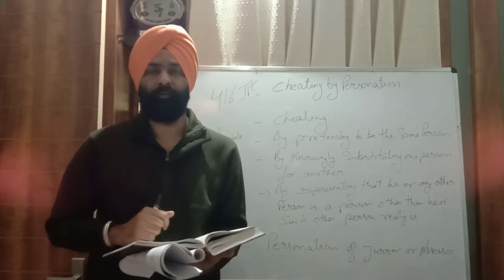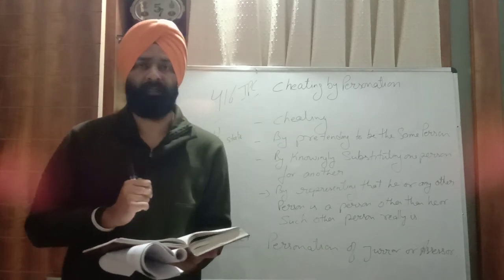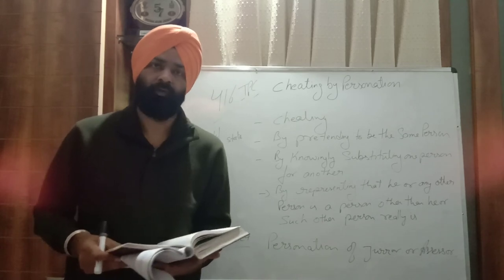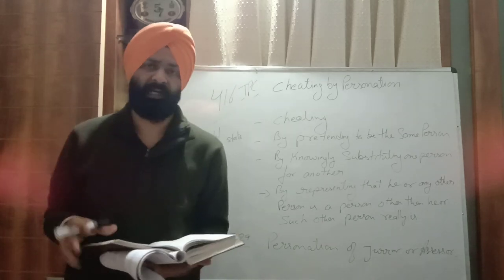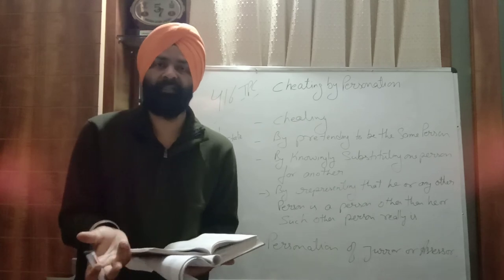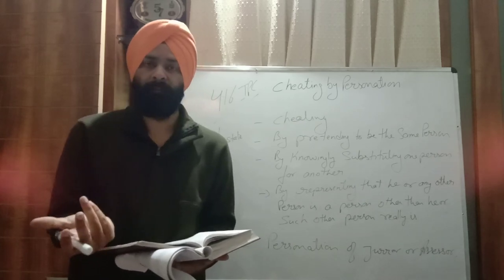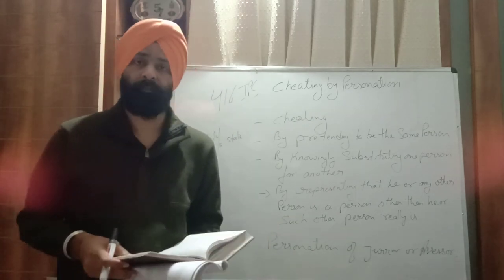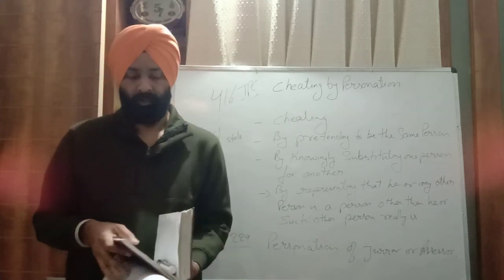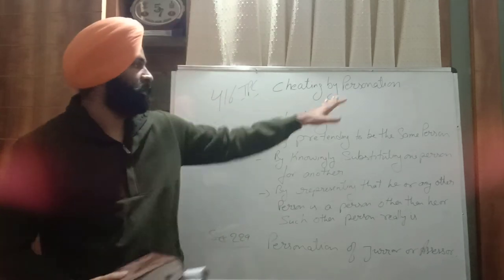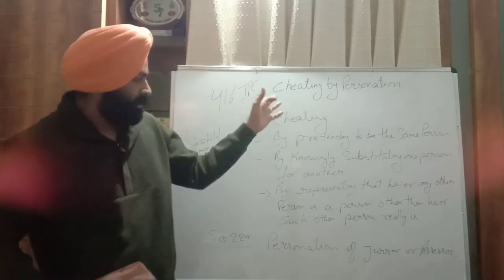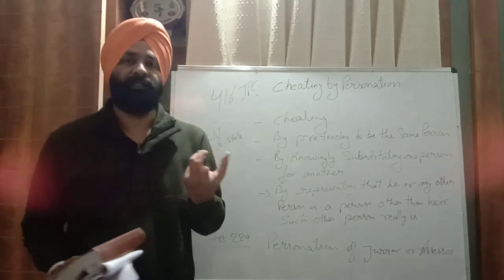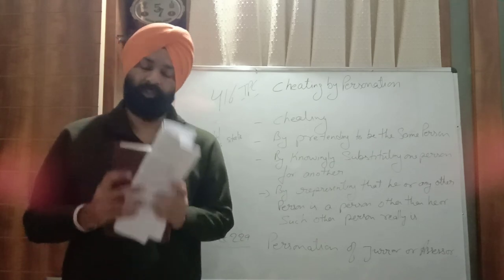We will also discuss Section 420 next, which is an important section from the exam point of view. This part regarding cheating and personation is very important. After that, we will move to mischief sections starting from Section 425 onwards. This part is very important from the exam point of view. In case of any doubt or problem regarding personation, please discuss. The examples I gave should help you properly understand this section. Thank you so much.